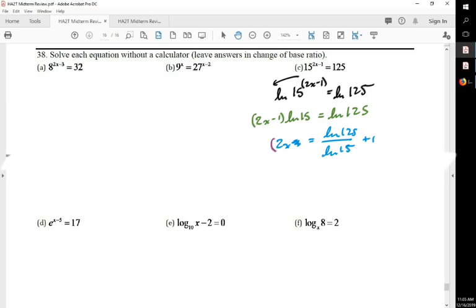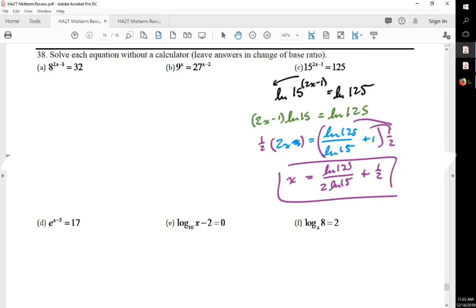Now instead of dividing by 2, I'm going to multiply by 1 half because it makes it look prettier. So I have x, because 1 half times 2 is 1x. And then when I distribute this, I get natural log of 125 over 2 natural log of 15 plus 1 half. And that would be an excellent answer.